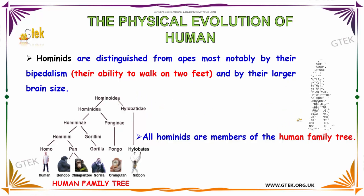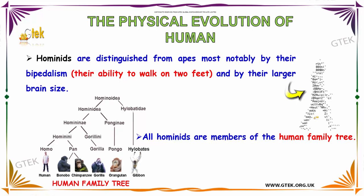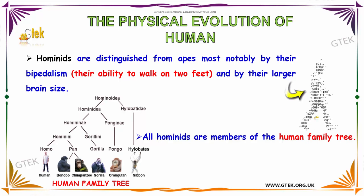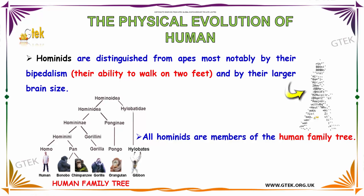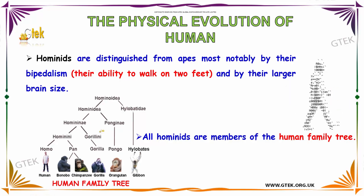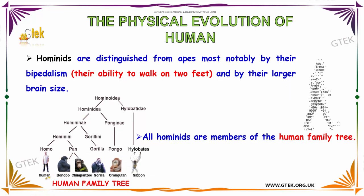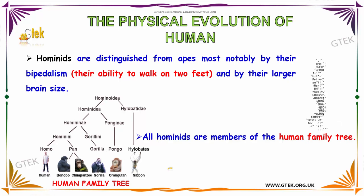Hominids are distinguished from apes most notably by their ability to walk on two feet and by their larger brain size. You can see the human family tree here, and all hominids are members of the human family tree.